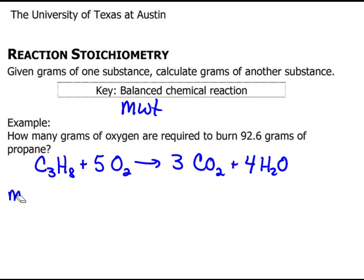Now before I go into one of these methods, I want to slow down just a minute and write down what I'm given. I'm given 92.6 grams of propane, and I want to find how many grams of O2. So let's look at the first method here.